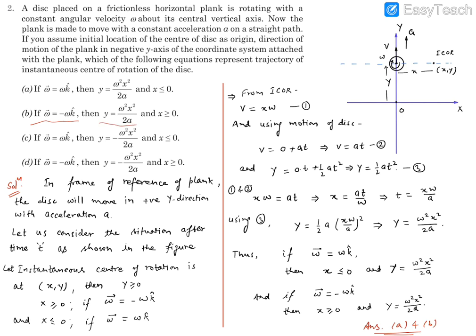And y came out to be yes omega square x square by twice a and x region was positive x. So this zone was positive x.